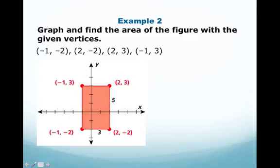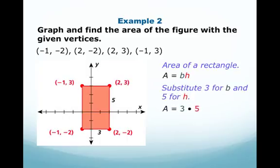So when we find the area, we're going to multiply the base times the height. So when we plug in the base for 3 and the height for 5, we get area equals 3 times 5. When you multiply 3 times 5, you get 15, so the area is going to be 15 units squared.